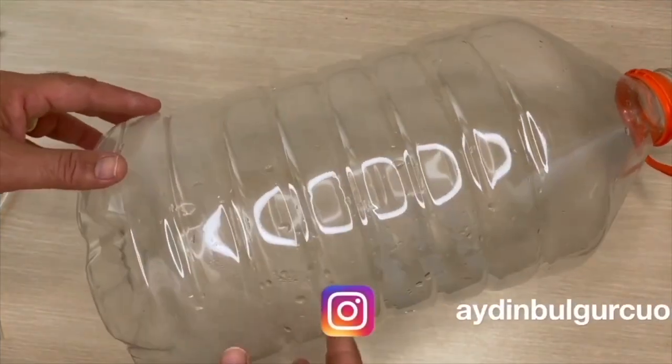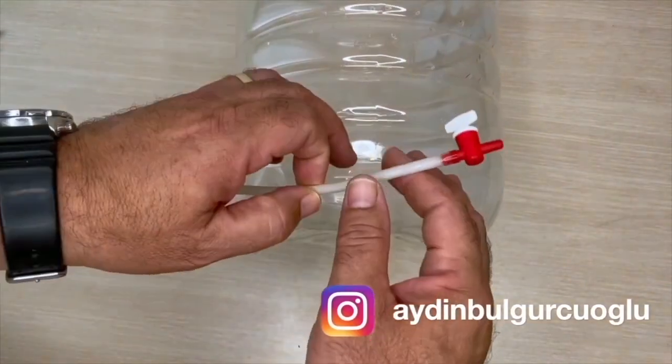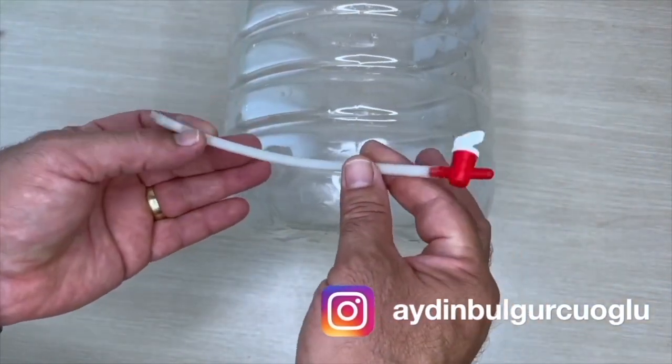Second method, choose your pet bottle according to the area you will irrigate. Buy an air hose and an air tab from an aquarium supply store.